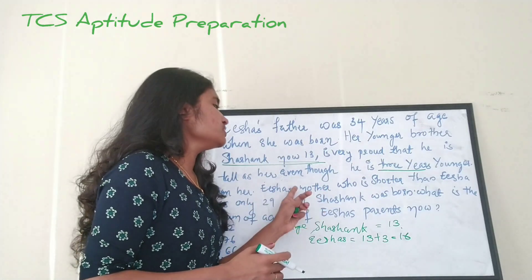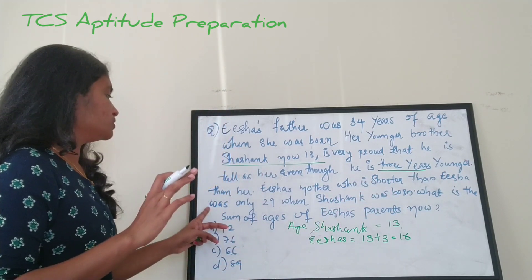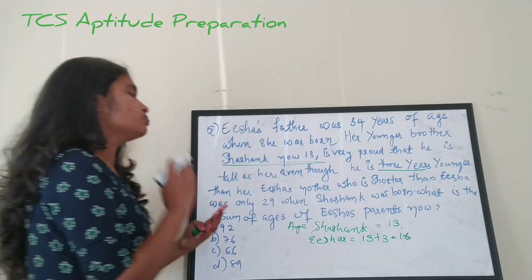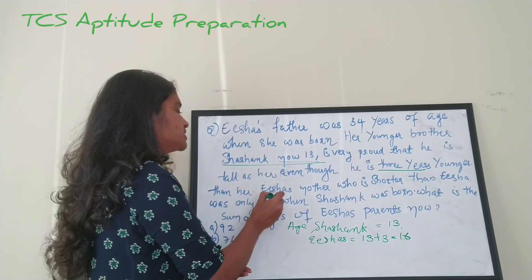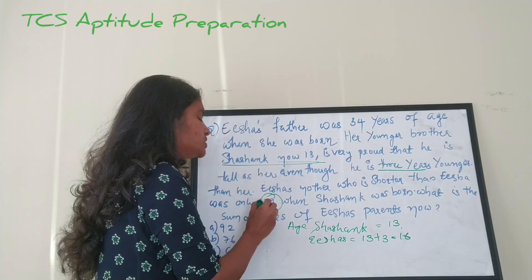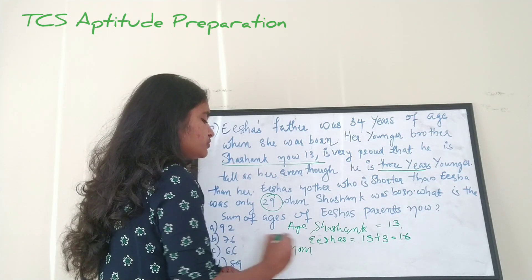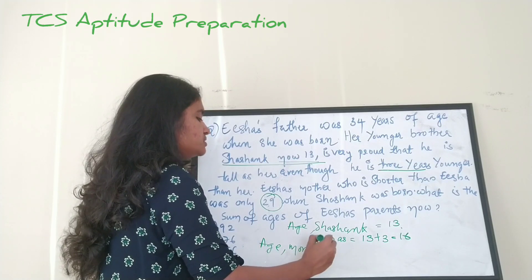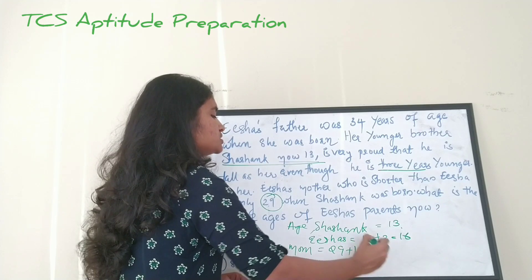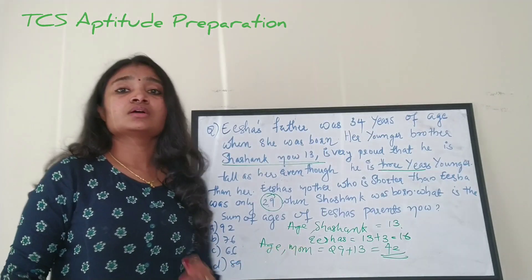Now we are going to find Isha's mother's age. The height detail — that Isha's mother is shorter than Isha — we ignore. It is given that she was 29 when Shashank was born. So Isha's mother's current age is 29 plus Shashank's current age of 13, which equals 42. So mom's current age is 42.